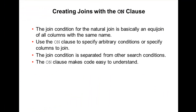Now let me explain creating joins with the ON clause. The USING clause is easy when both tables have more than one identical column and you want to explicitly specify which column to use. But with the ON clause, the join condition for the natural join is basically an equi-join of all columns with the same name. You use the ON clause to specify arbitrary conditions or column names for the join. The join condition is separated from other conditions, making the code easier to understand.